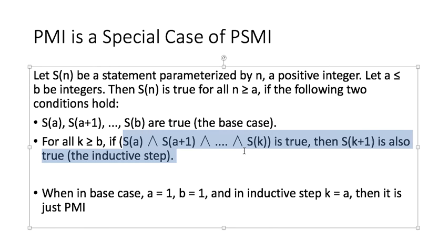And here you don't have S(a) up to S(k). Your S(k) is just S(a). So you only have one term here that's true. Then you prove, then you conclude that S(k+1) is also true under that condition. So you can see the principle of mathematical induction is just a special case of principle of strong mathematical induction.